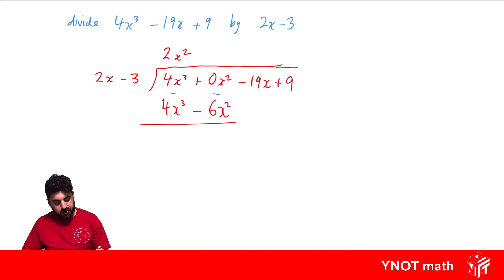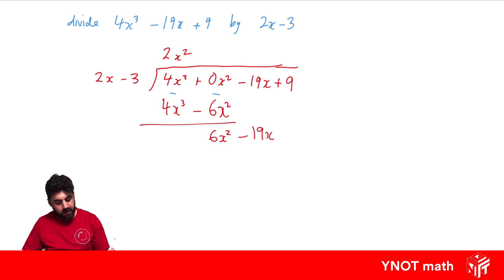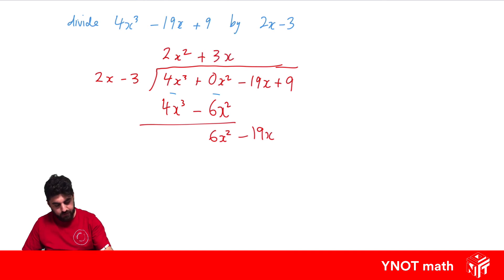When we go to subtract: 4x cubed minus 4x cubed is 0. Now 0x squared minus minus 6x squared gives us positive 6x squared. We bring down our next term, minus 19x, and repeat the process. How many times does 2x go into 6x squared? That would be 3x. We multiply 3x by every term in our divisor, giving us 6x squared minus 9x.